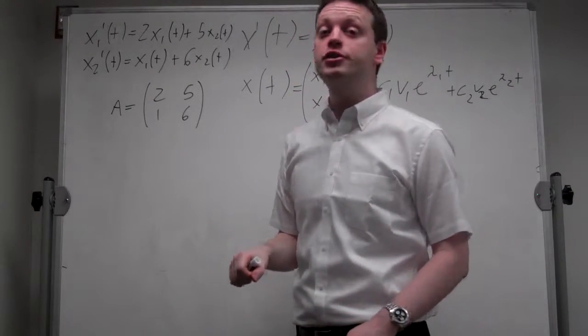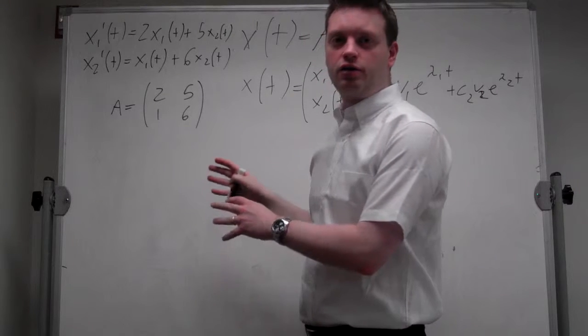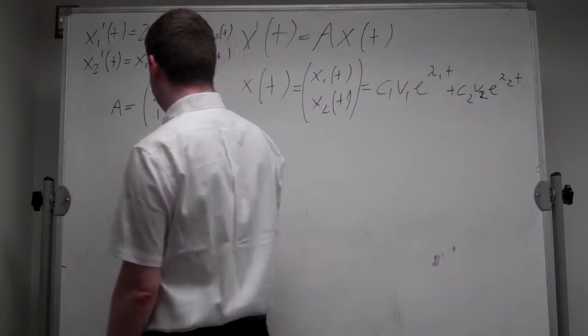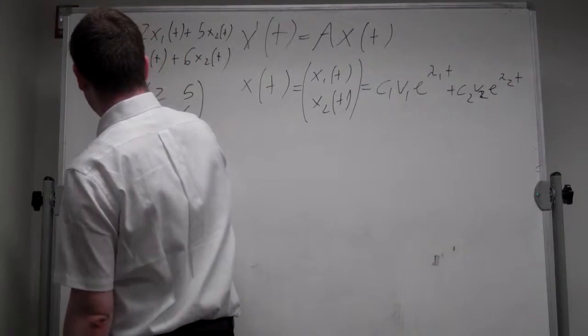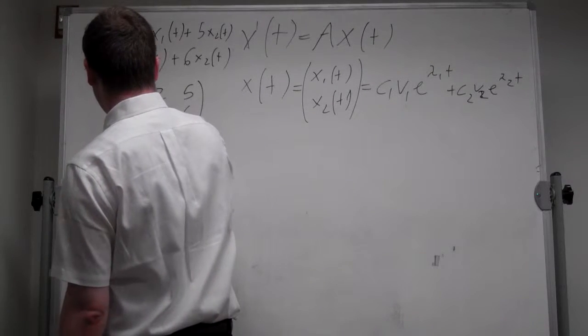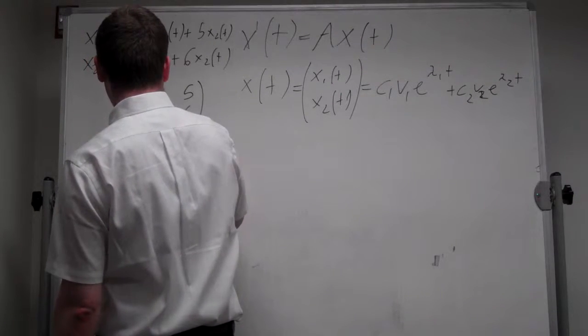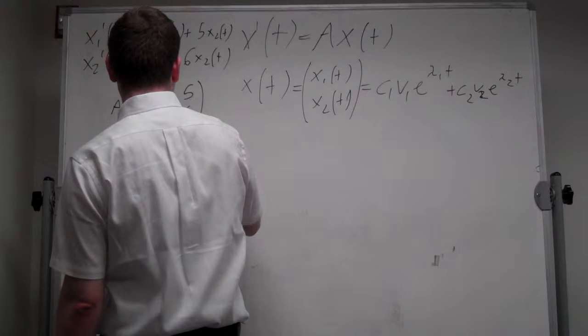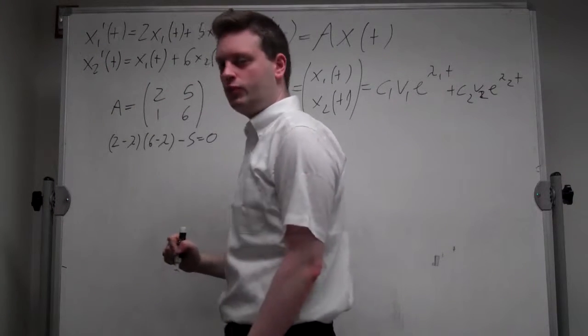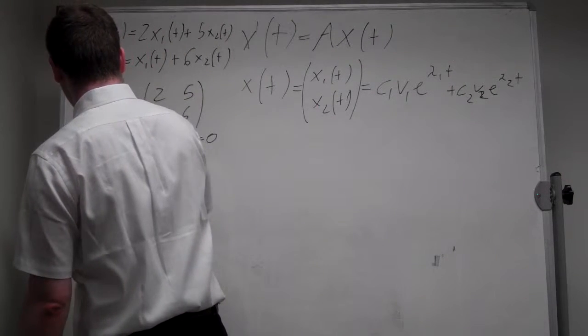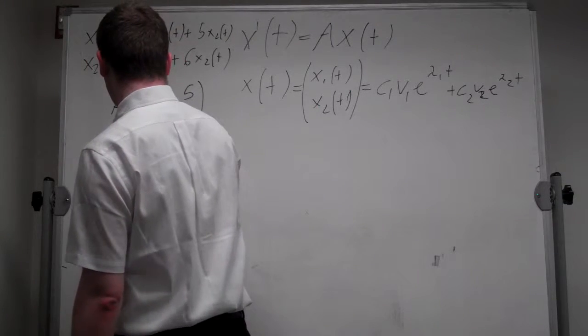To find the eigenvalues, let's write down the characteristic polynomial, which is 2 minus lambda times 6 minus lambda minus 5 equals 0.